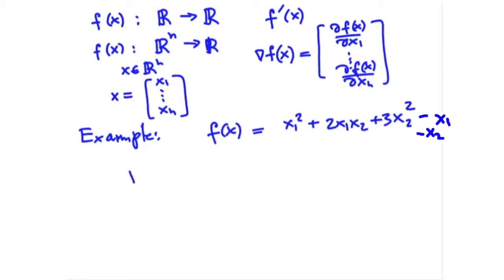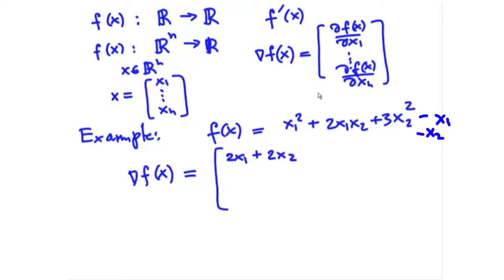To compute the gradient of this function, we first compute the first-order derivative with respect to x₁. For the first term it will be 2x₁, for the second term it will be 2x₂, then the derivative of the 3x₂² term with respect to x₁ is 0, and for the −x₁ term the derivative will be −1.